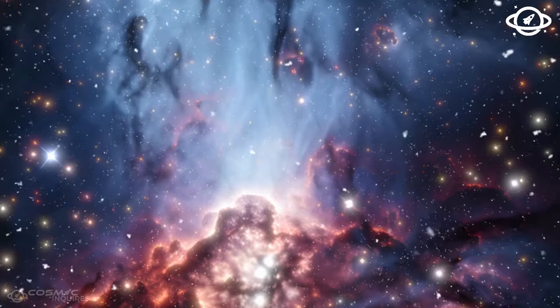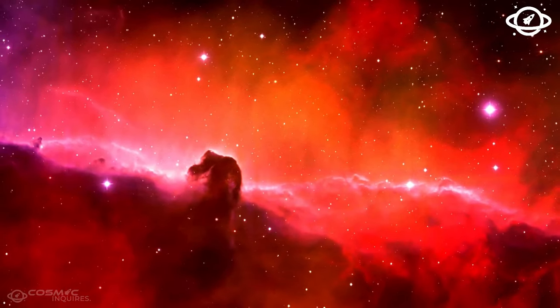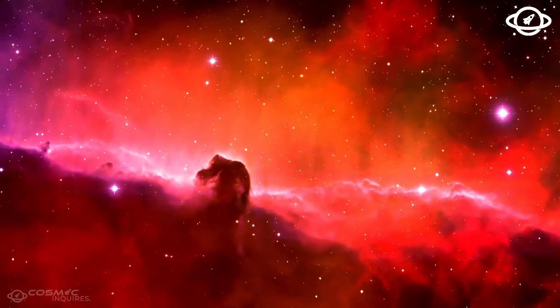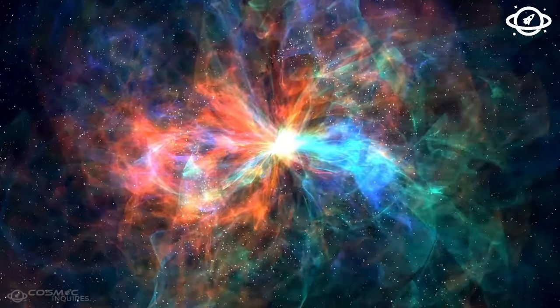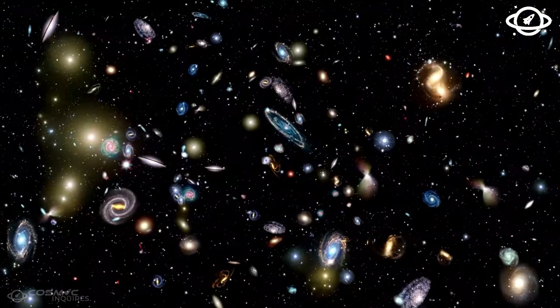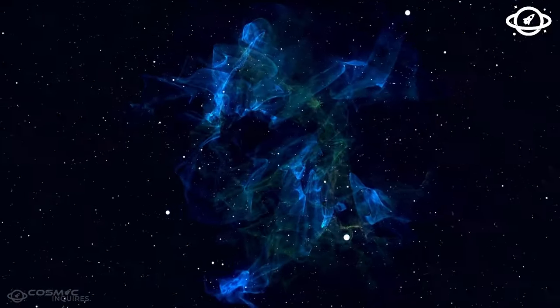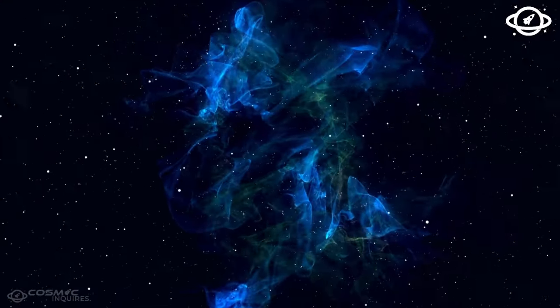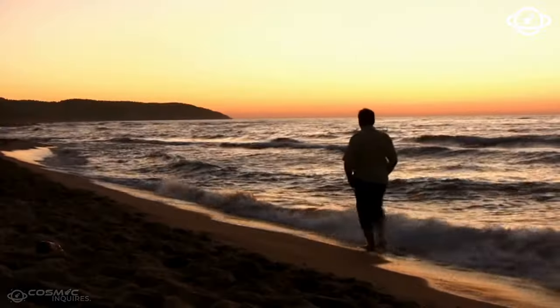It was thought that the Kuiper Belt held seven to ten times the mass of Earth. However, the NICE model suggests that a lot of that material may have been lost as the orbits of the big planets changed. Material in the Kuiper Belt may have been spread out, thrown out of the solar system, or moved to other areas because of the big planets' gravitational pull and changes in their orbits.